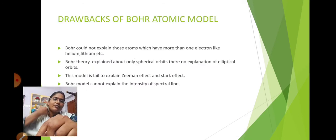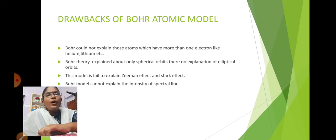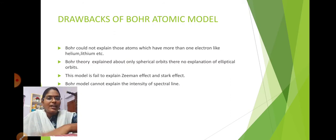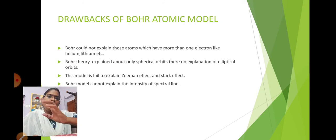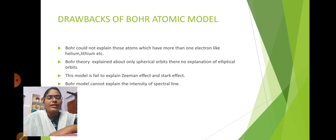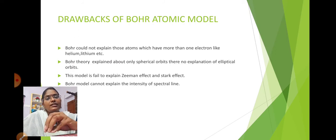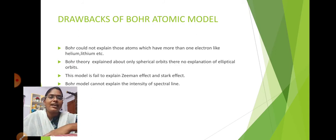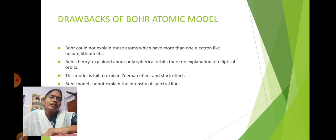The drawbacks of Bohr's Atomic Model: he could not explain atoms with more than one electron, such as helium or lithium. He did not explain elliptical orbits, could not explain the Zeeman effect or the Stark effect, and did not explain the intensity of spectral lines.